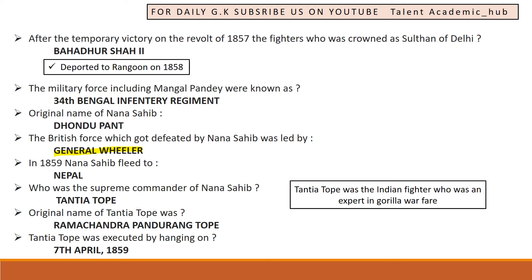Tantia Tope was hanged on 7th April 1859. Tantia Tope was the Indian freedom fighter who was an expert in guerrilla warfare.